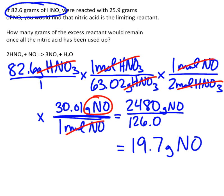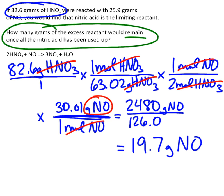Now, what this means is 19.7 grams of NO is going to react with all of the 82.6 grams of nitric acid. Now, the question is asking, revisit the question, how many grams of the excess reaction would remain once all the nitric acid has been used up?